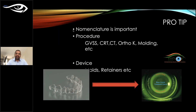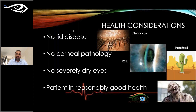In practice, you can describe ortho-k as corneal refractive therapy, corneal therapy, corneal molding, or vision shaping — you can frame it like orthodontics for the eye. For health considerations, look for an ideal normally healthy candidate. If they have blepharitis, treat that first before fitting ortho-k. Make sure there is no corneal pathology. Severely dry eyes should be avoided at this stage, though experienced fitters can actually treat dry eyes with ortho-k — that is another lecture. Patients in reasonably good general health is vital.